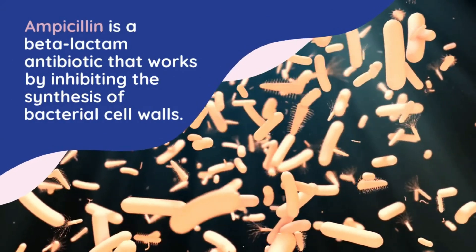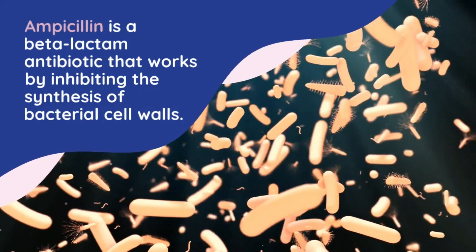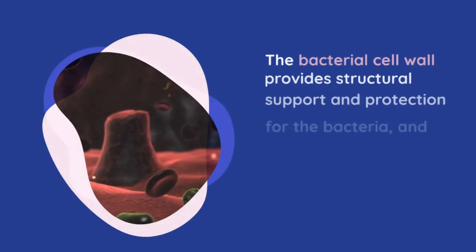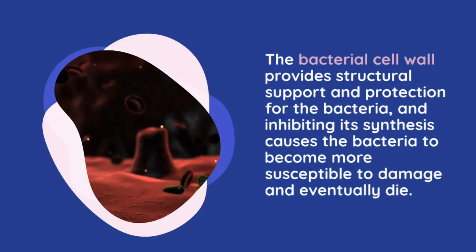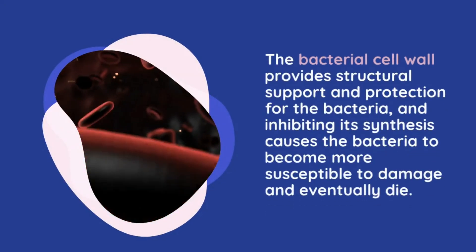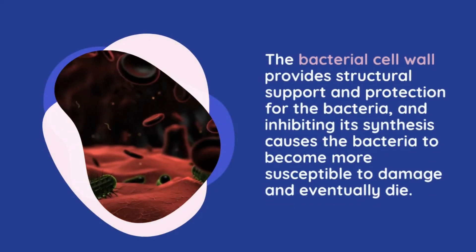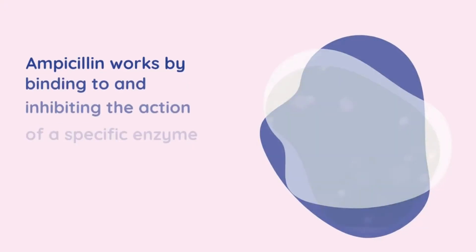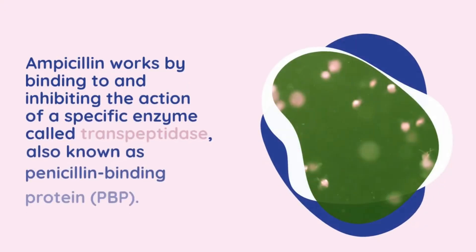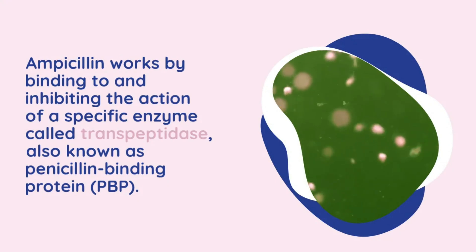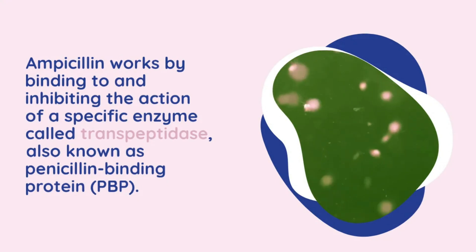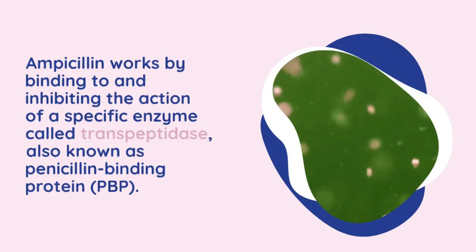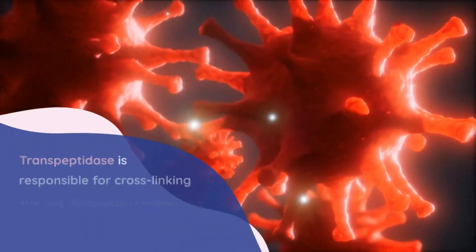of bacterial cell walls. The bacterial cell wall provides structural support and protection for the bacteria, and inhibiting its synthesis causes the bacteria to become more susceptible to damage and eventually die. Ampicillin works by binding to and inhibiting the action of a specific enzyme called transpeptidase, also known as penicillin-binding protein.